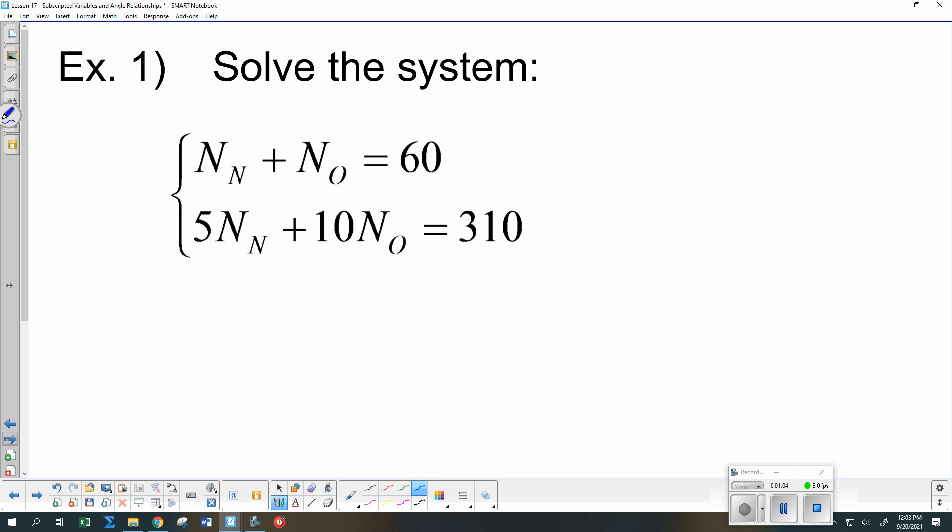So beginning with subscripted variables, I really just have two variables in this. One of the variables is an N. The other one is an O. I could have done this X plus Y is 60, 5X plus 10Y is 310. So you guys tell me what are some choices for how we might solve this. Bryce?